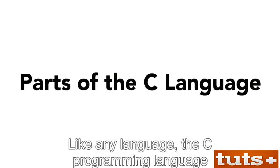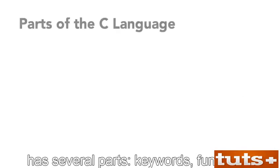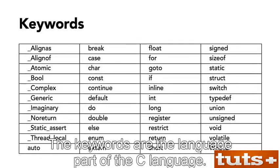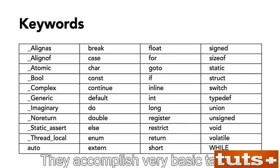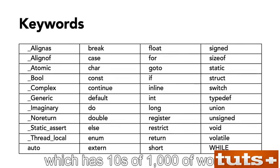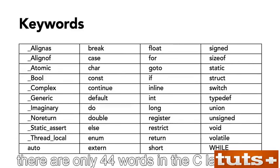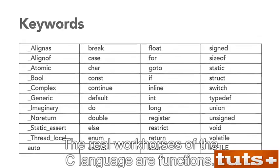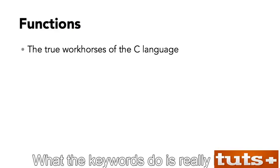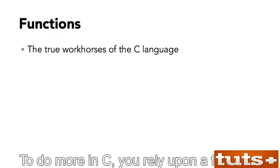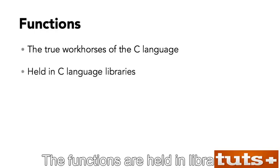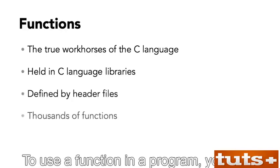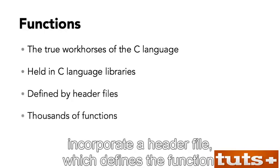Like any language, the C programming language has several parts: keywords, functions, operators, values and variables, and structure. The keywords are the language part of C — they accomplish very basic tasks. Unlike English which has tens of thousands of words, there are only 44 words in the C language. In practice, you may only use about half. The real workhorses are functions. To do more in C, you rely upon a function, and functions are held in libraries. The linker's job is to combine the library with your program's object code. To use a function, you must incorporate a header file which defines the function.